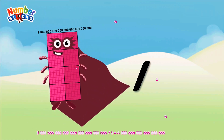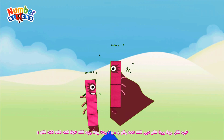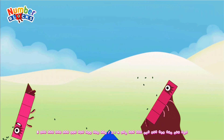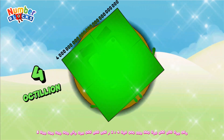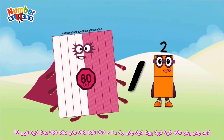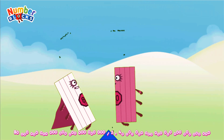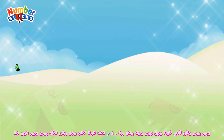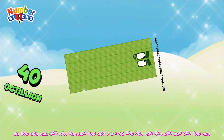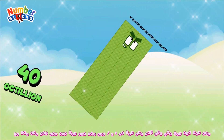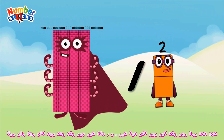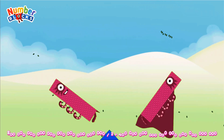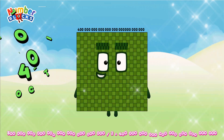Eight octillion divided by two equals four octillion. Eight octillion divided by two equals forty octillion. Eight hundred octillion divided by two equals four hundred octillion.